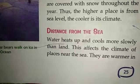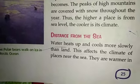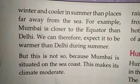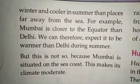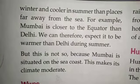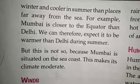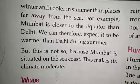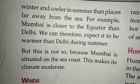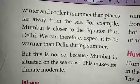Water heats up and cools more slowly than land. This affects the climate of the places near the sea. They are warmer in winter and cooler in summer than places far away from the sea. For example, Mumbai is closer to the equator than Delhi. We can therefore expect it to be warmer than Delhi during summer, but this is not so because Mumbai is situated on the sea coast, which makes its climate moderate.